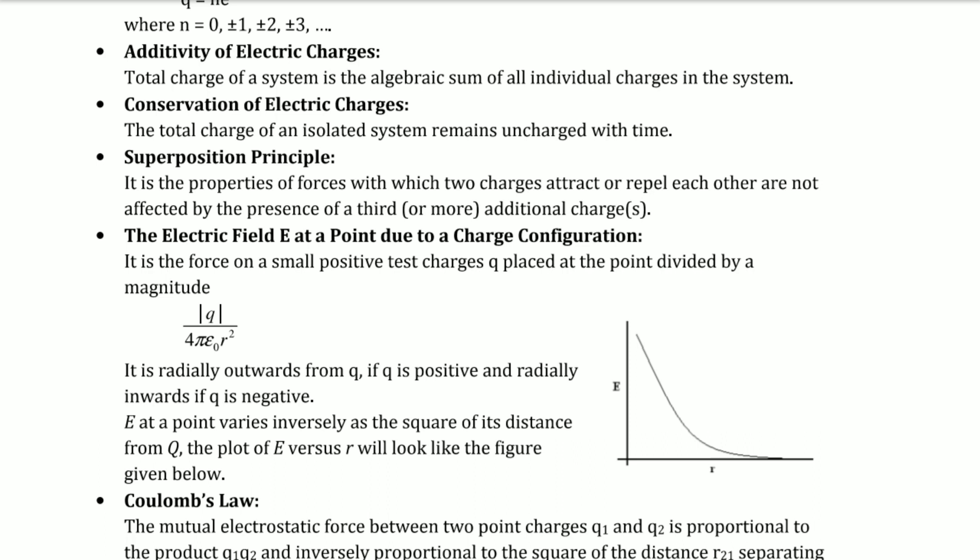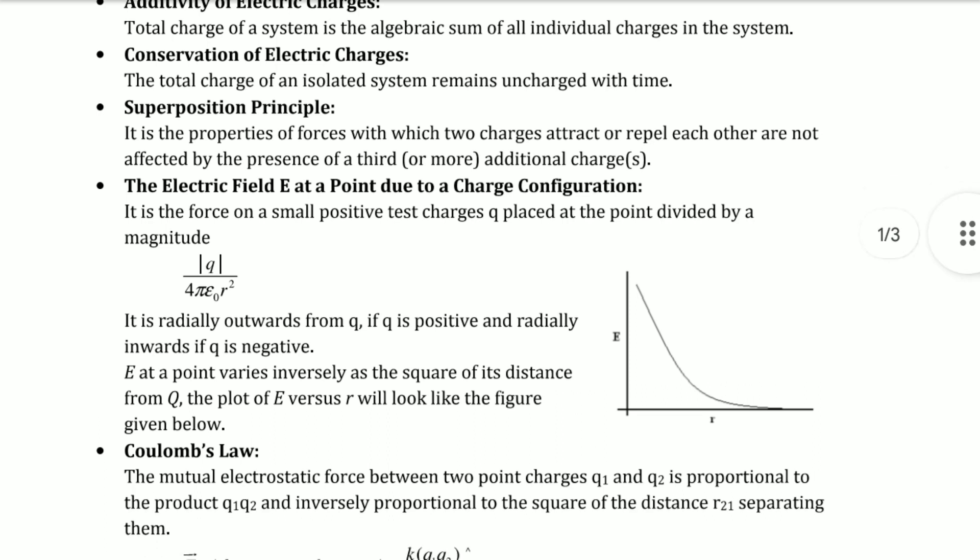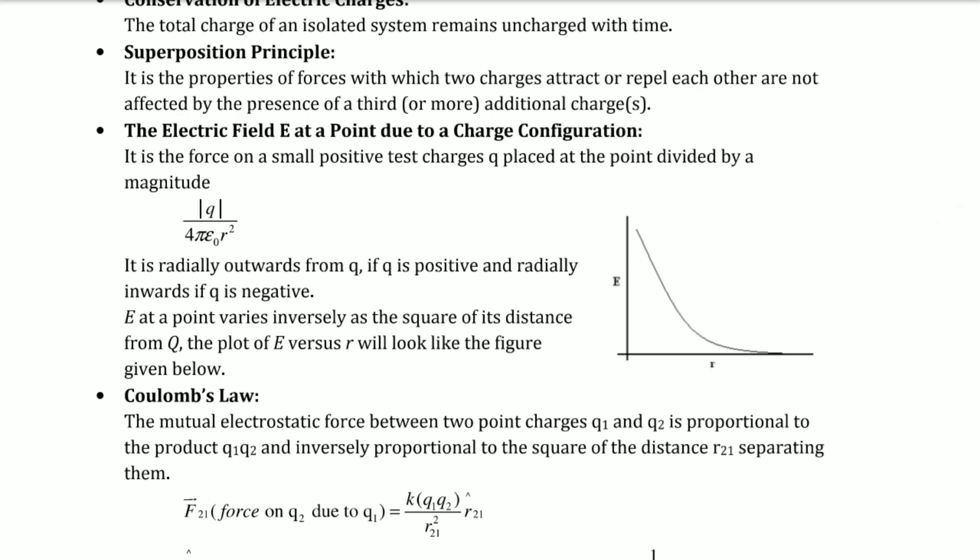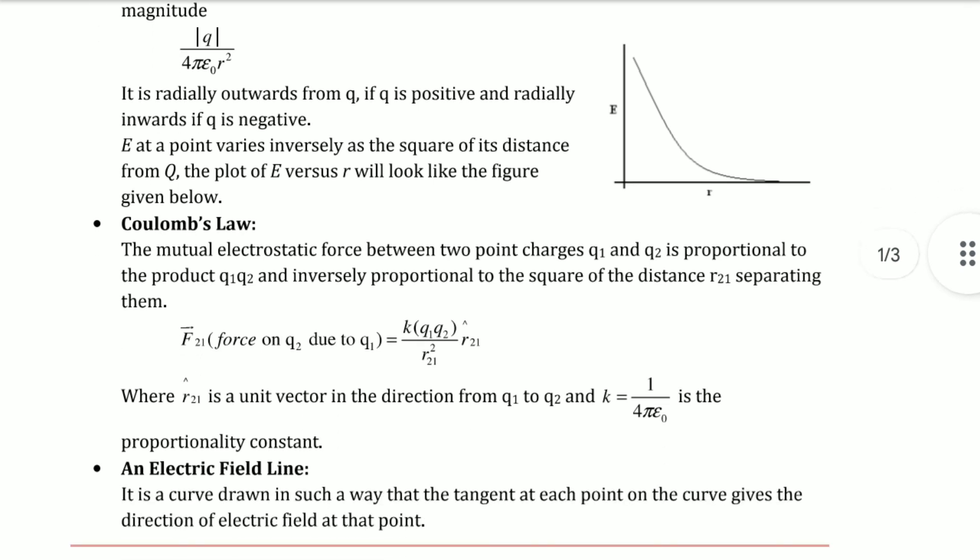Electric field E at a point due to a charge configuration is the force on a small positive test charge q placed at the point divided by the magnitude. The formula is |E| = q/(4πε₀r²). It is radially outward from q if q is positive and radially inward if q is negative. E varies inversely as the square of distance from q. The plot of E versus r looks like the figure given below.